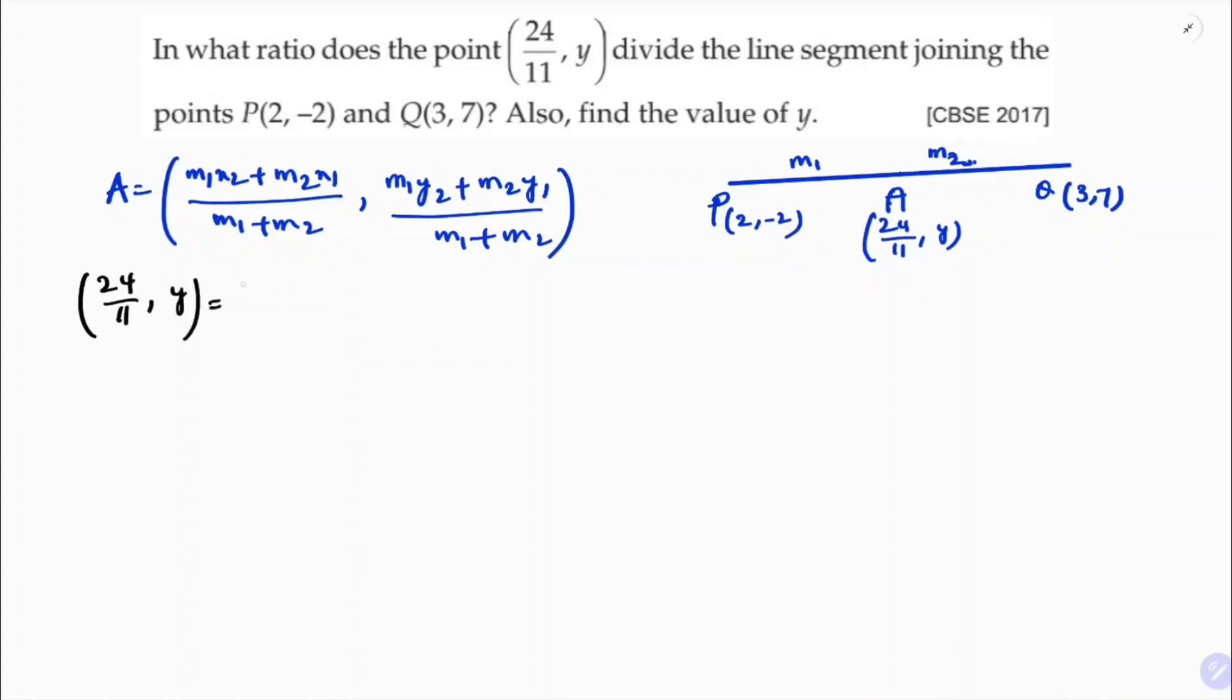Equals m1, you can take here k is to 1, it will be more simpler, or you can directly do with m1 and m2. So m1·x2, see x1, y1, x2, y2. So m1·x2 plus m2·x1 by m1 plus m2, and m1·y2 which is 7 plus m2·y1 which is minus 2 by m1 plus m2. Now here see, if I equate ordinate with ordinate, no use because here we have y. So what I will do is equate abscissa with abscissa, so 24 by 11.